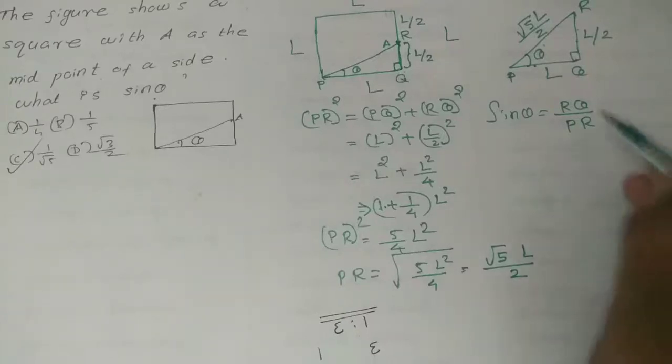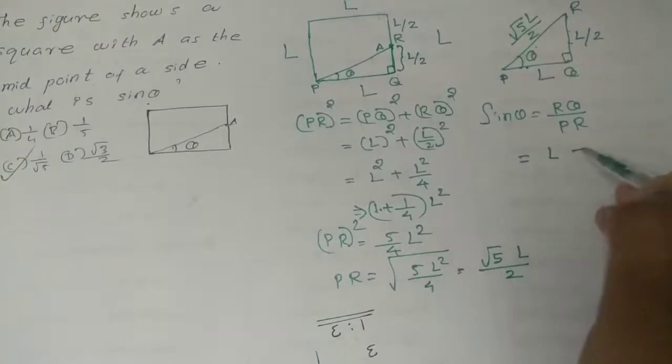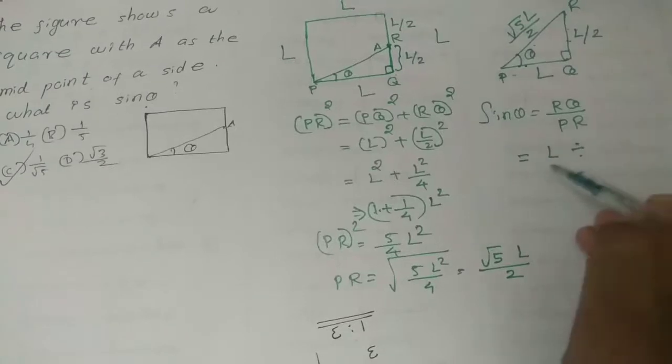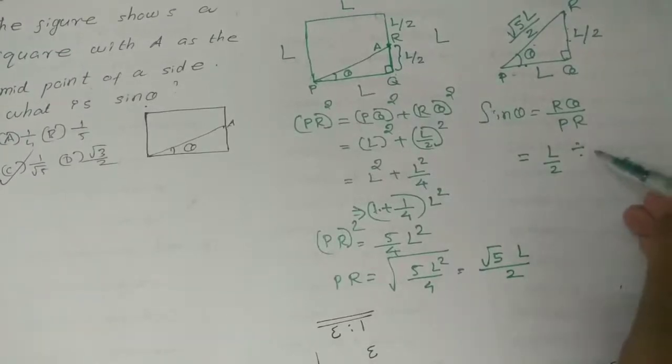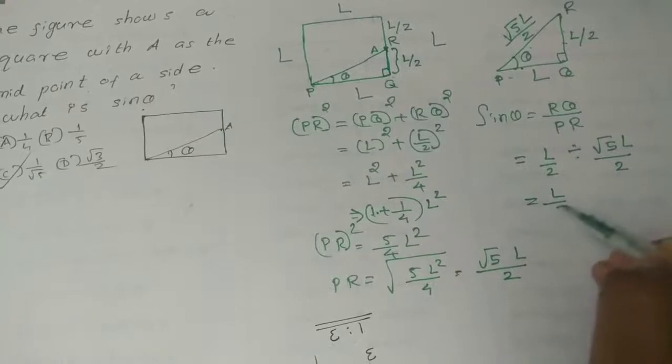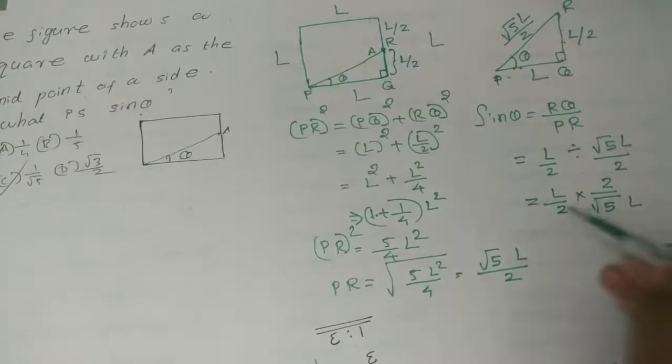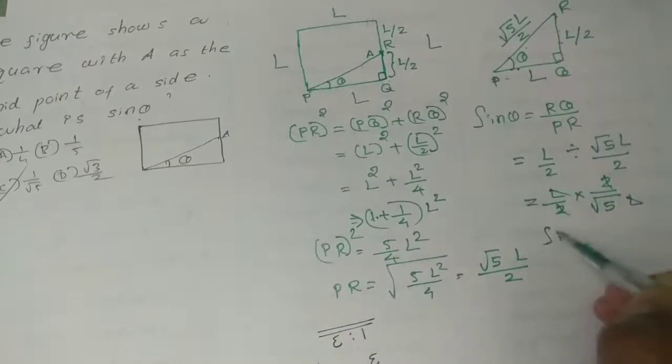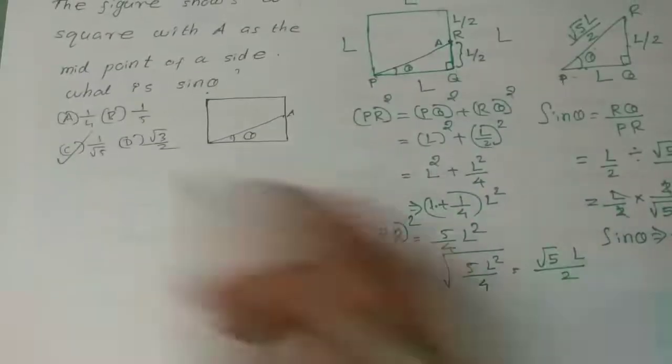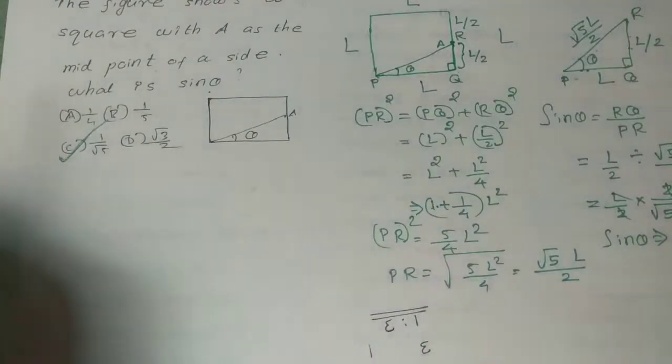The opposite side is L by 2, and PQ is root 5L divided by 2. So L by 2 divided by root 5L by 2 equals 1 by root 5. The answer is option C, equal to 1 by root 5.